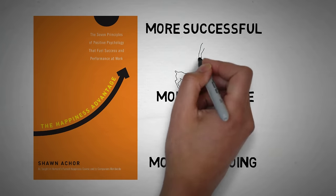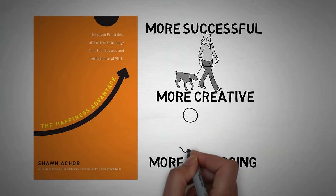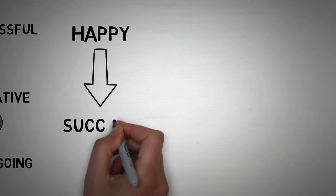This is why the company Google encourages dog days where workers can bring their dogs to work, and to often take breaks playing ping pong and soccer. And this is the first principle of the Happiness Advantage. That successful people aren't always happy, but happy people are always successful.